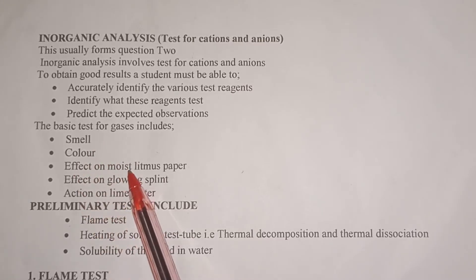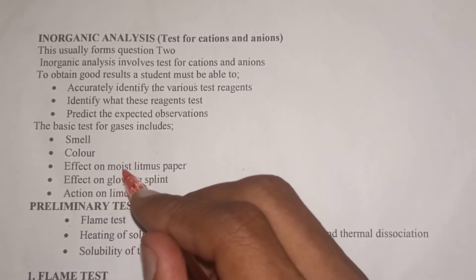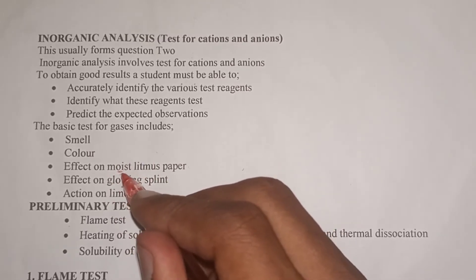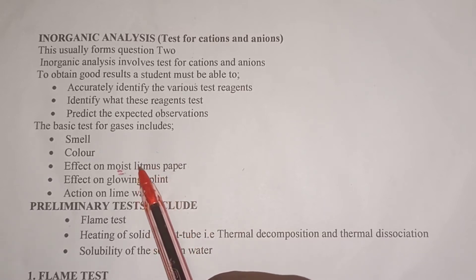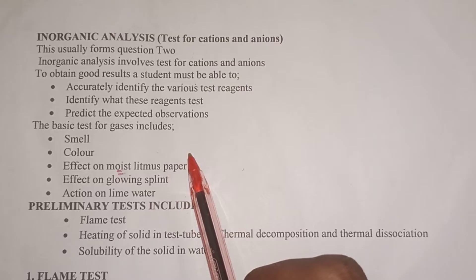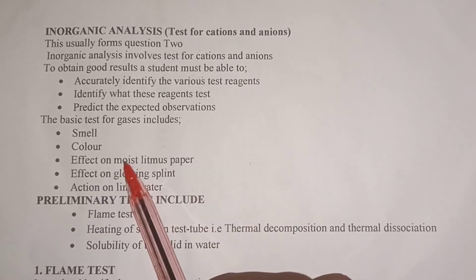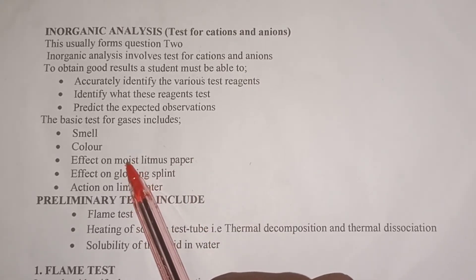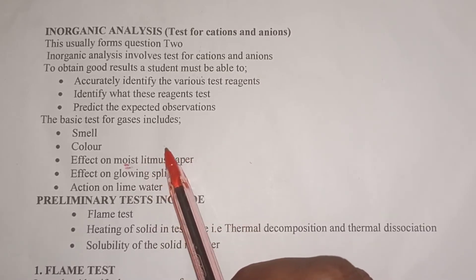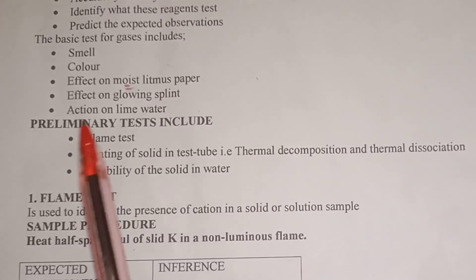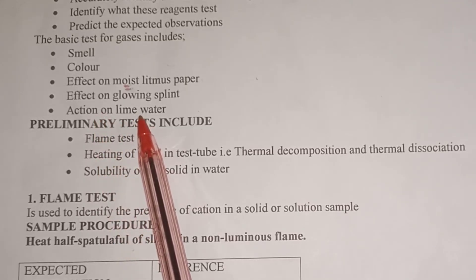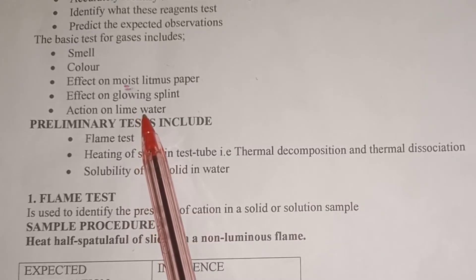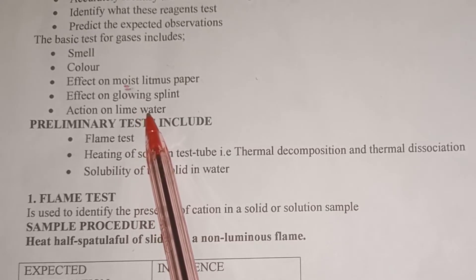The effect on moist litmus paper — the word here is moist, meaning it should have moisture. There are gases that turn moist blue litmus paper to red, meaning those gases are acidic. There are those that turn moist red litmus paper to blue, meaning those gases are basic. Another basic test is the action on lime water: carbon dioxide is tested by passing it through lime water (calcium hydroxide) for a short while, and it forms a white precipitate.